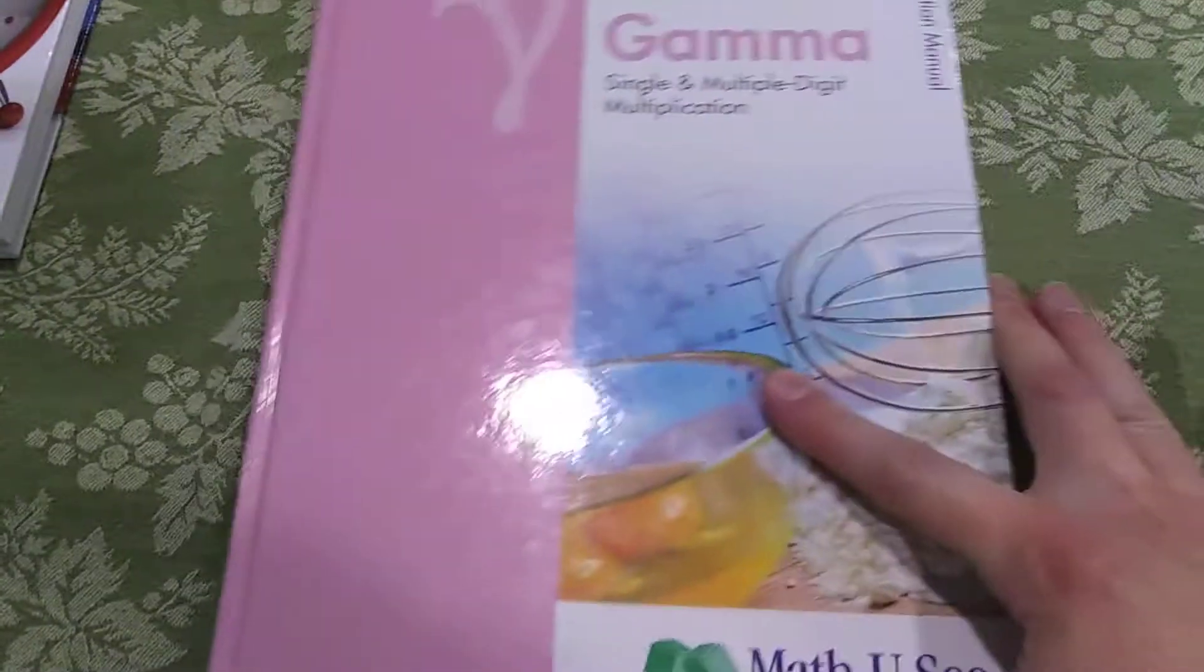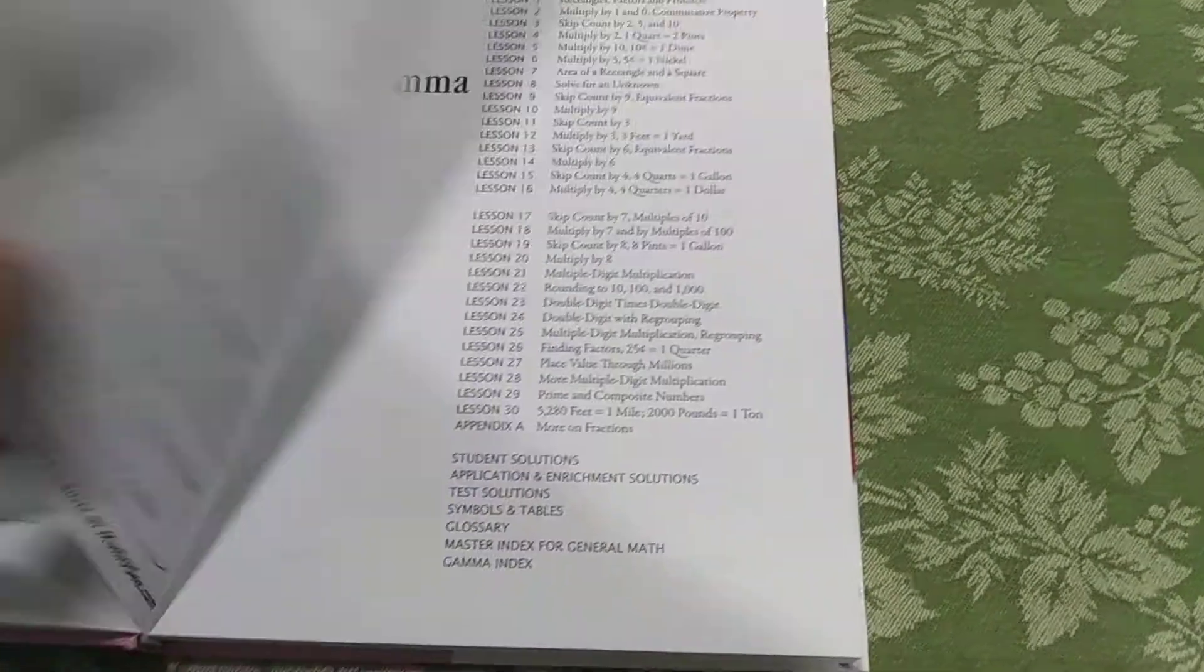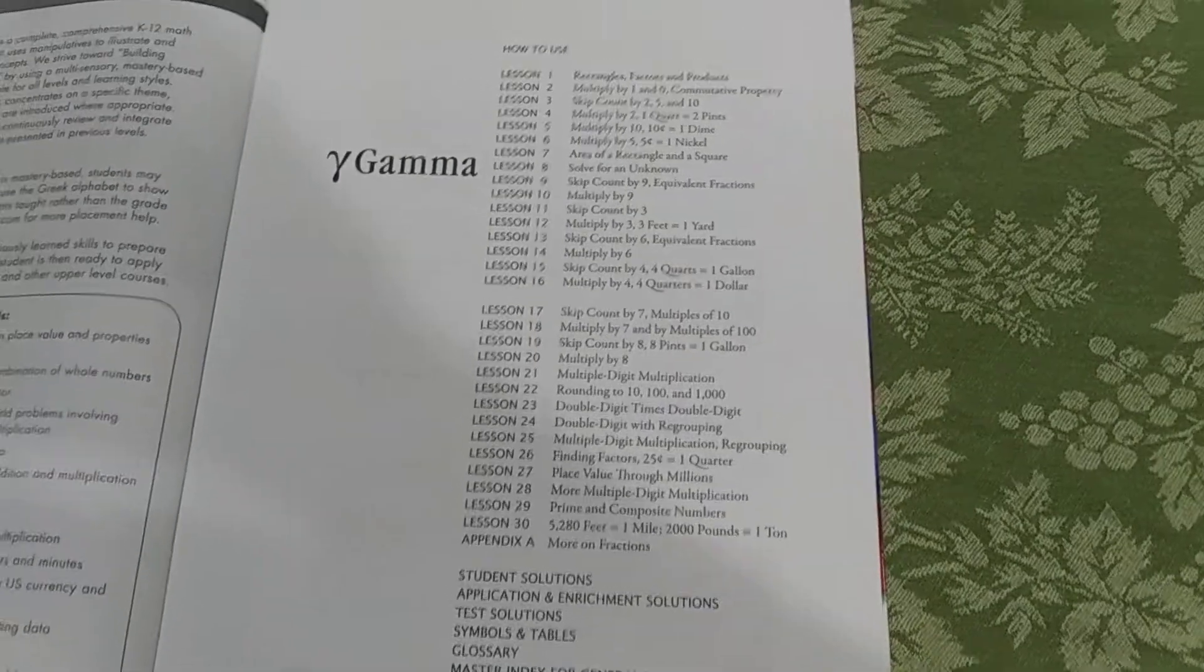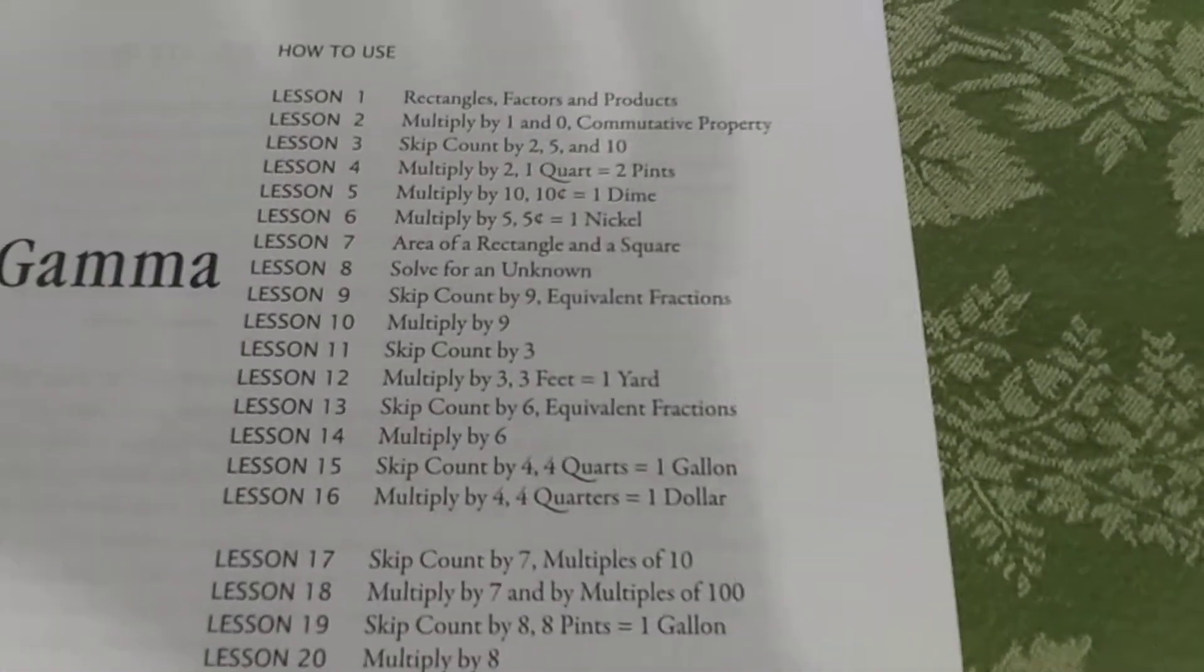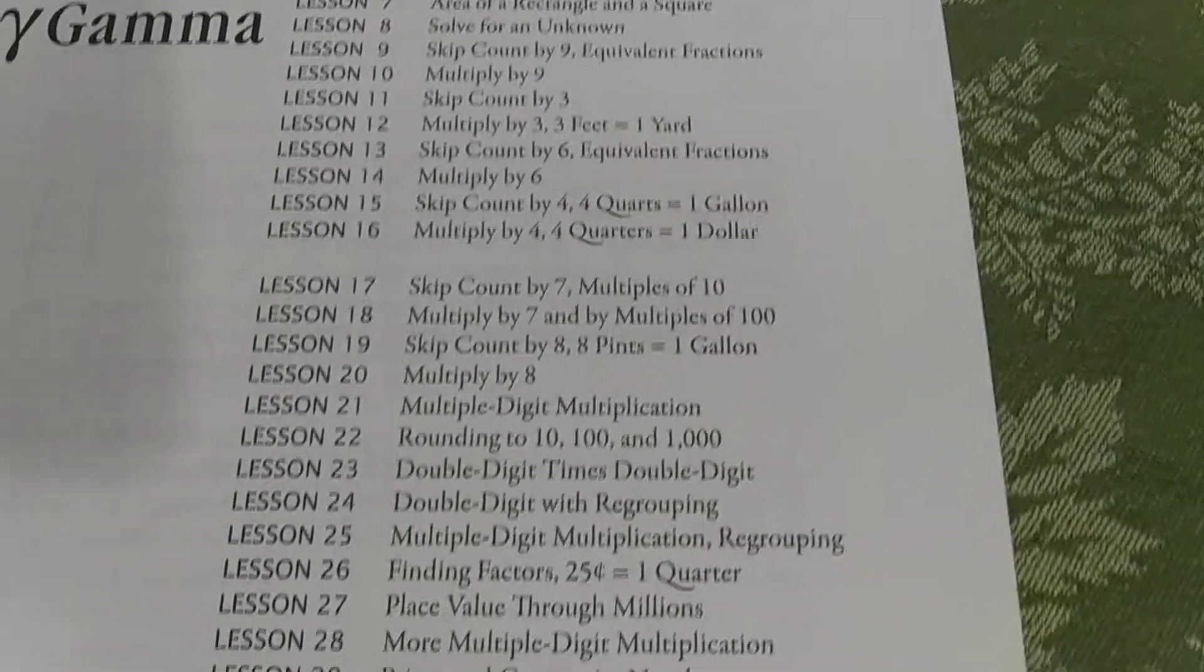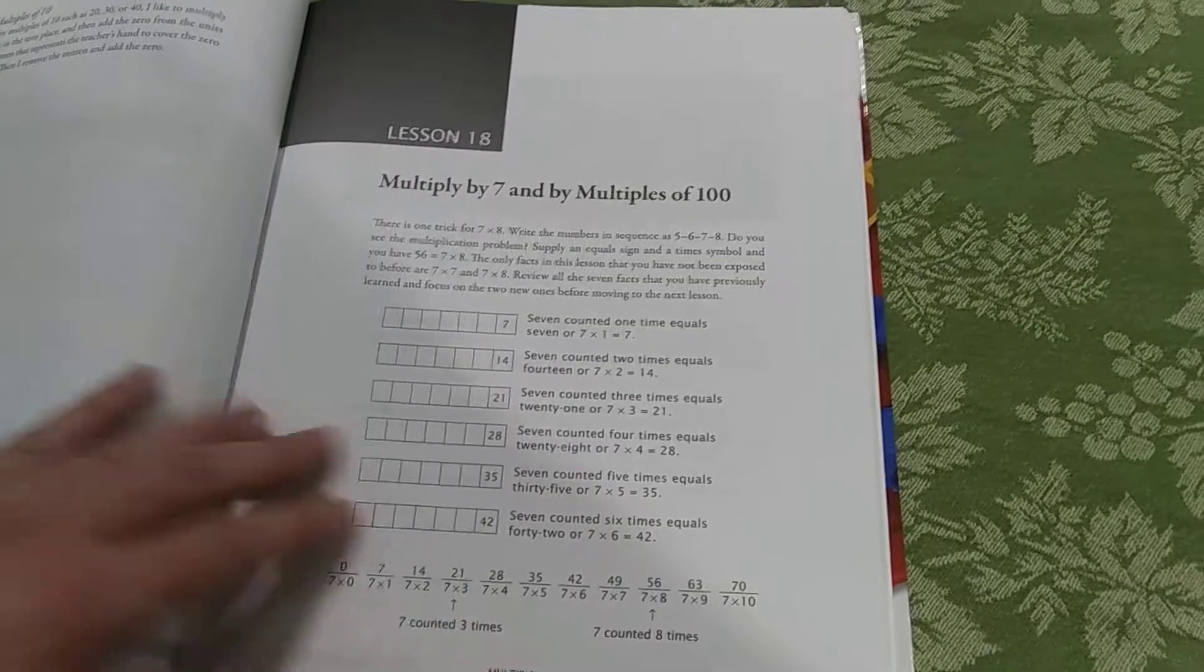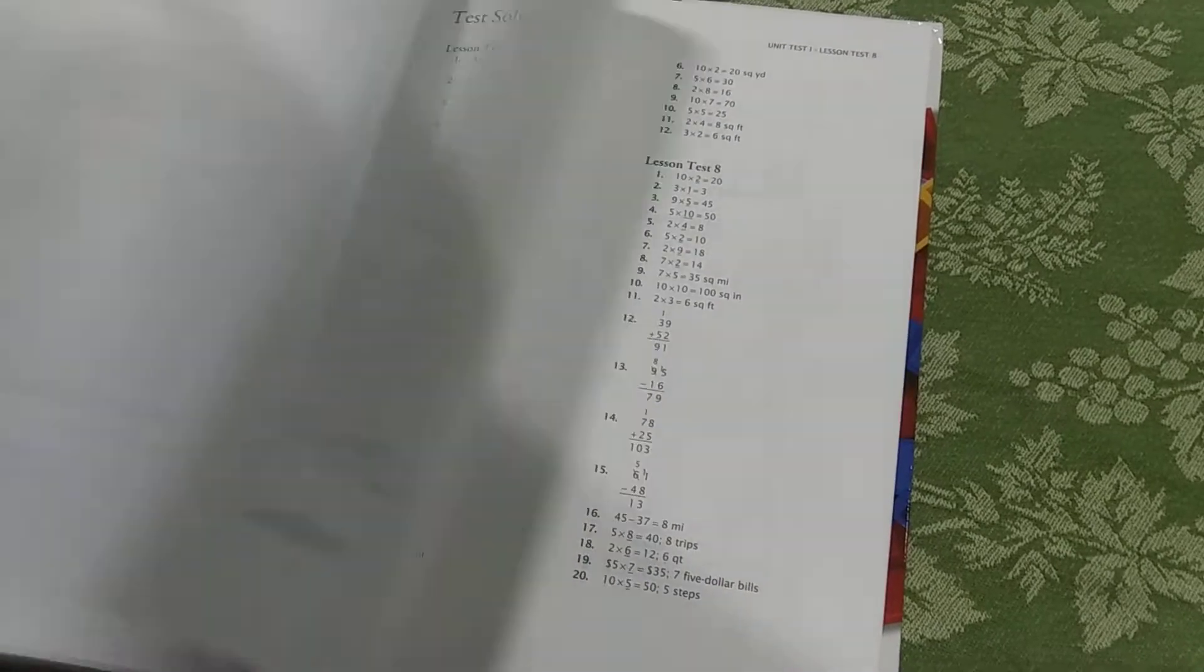Okay, I'll go through all the other levels I have and show you the table of contents. The next level is Gamma. Single and multiple digit multiplication. I actually had a child go through third grade math three times because he couldn't get multiplication. And then once he got into Math-U-See, everything just clicked. I think he's a huge Lego fan and the blocks just looked like Legos to him and it worked. So he is a lifelong Math-U-See fan. So here are the lessons. The teacher's guide explanations. And again, answers in the back.